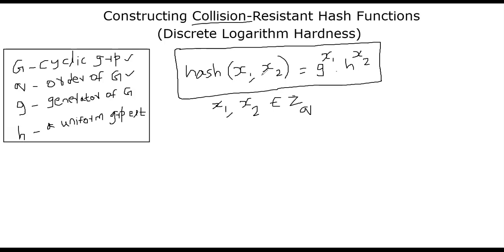I can compute hash of any two points. Hash of x1, x2 is equal to g power x1 times h power x2. So what is x1? x1 and x2 are two elements that belong to zq, meaning from 0 through q minus 1.